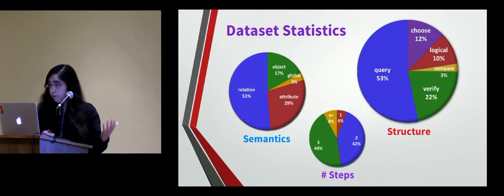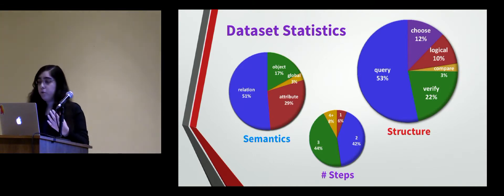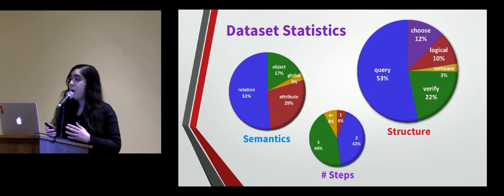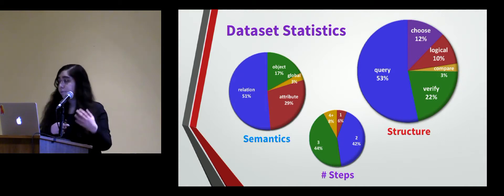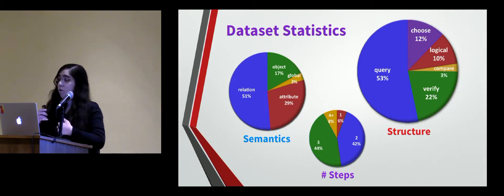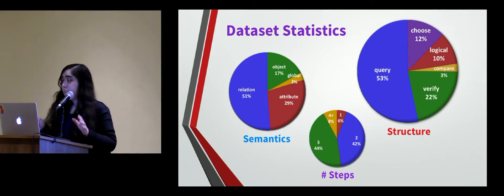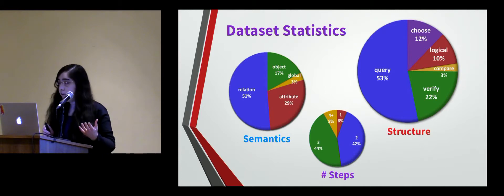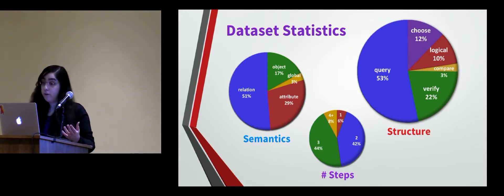The pie charts here show the distribution of questions based on various types, and also the different number of reasoning steps they require. Most questions require about two or three steps, though there are also questions that require less or more. In these steps you have to traverse from one object to the next or do some sort of transitive reasoning. We provide for all these questions both the standard natural language form as well as the structured semantic form.